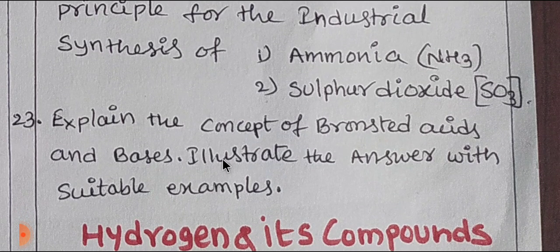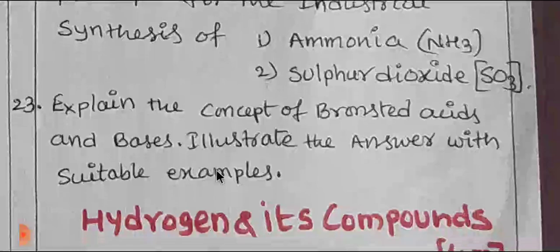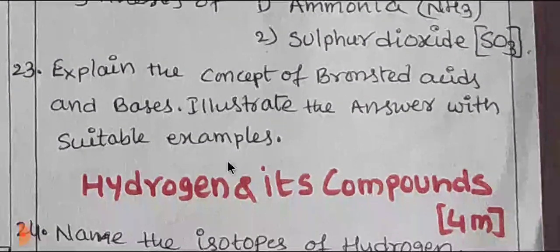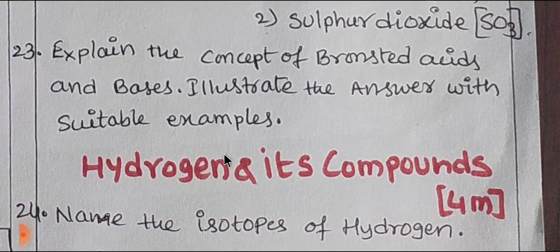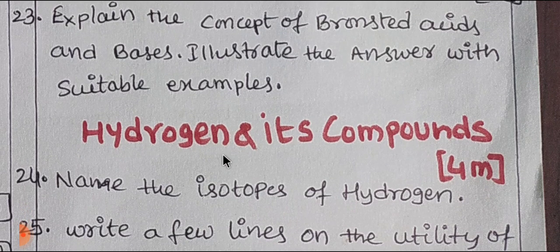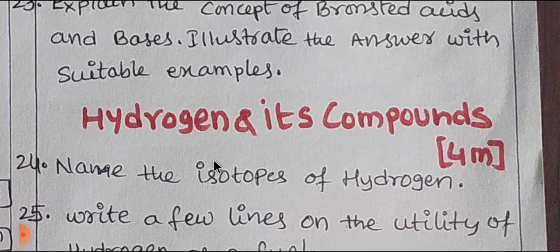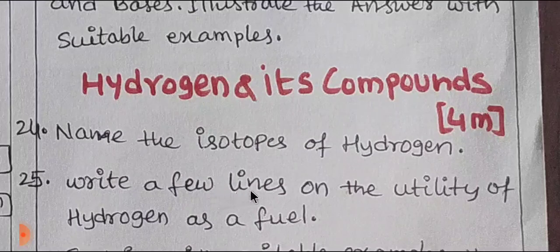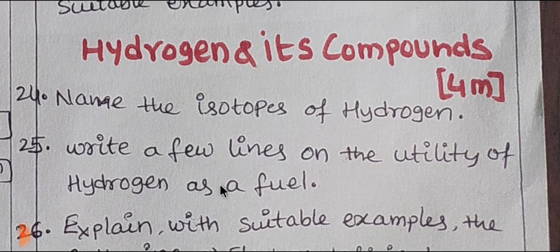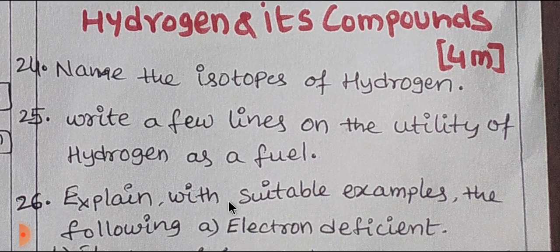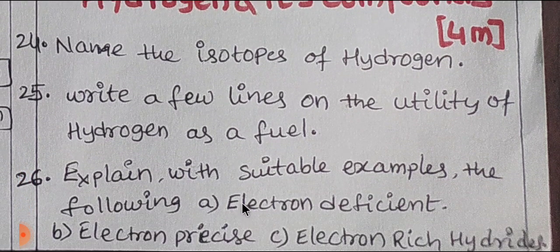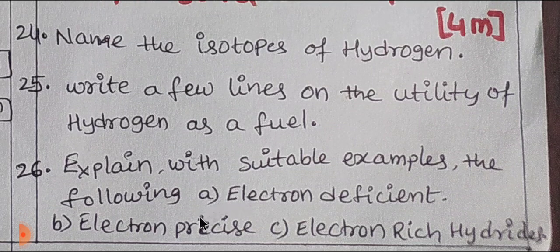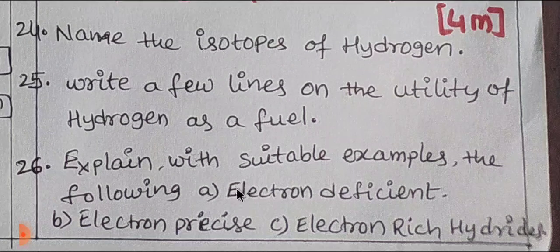What is chemical equilibrium and acid-base theory? Next is Hydrogen and its Compounds, which carries 4 marks. Topics include the isotopes of hydrogen, writing a few lines on the utility of hydrogen as a fuel, and explaining with suitable examples: electron-deficient hydrides, electron-precise hydrides, and electron-rich hydrides.